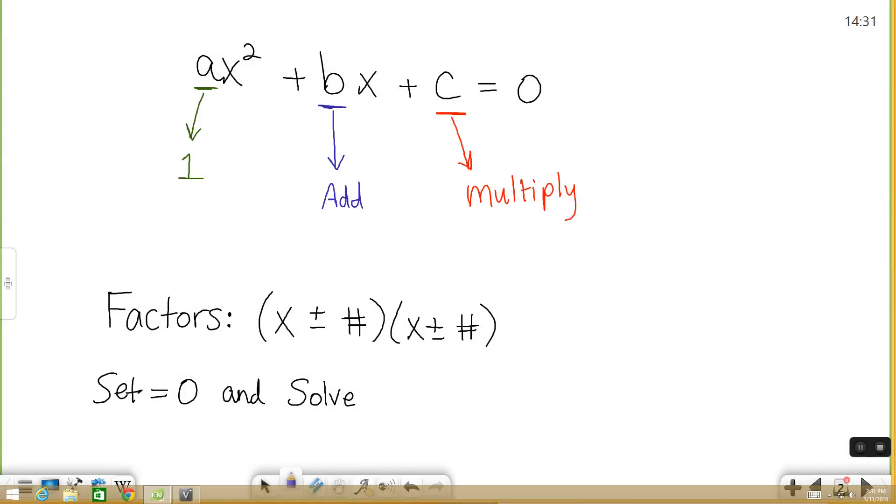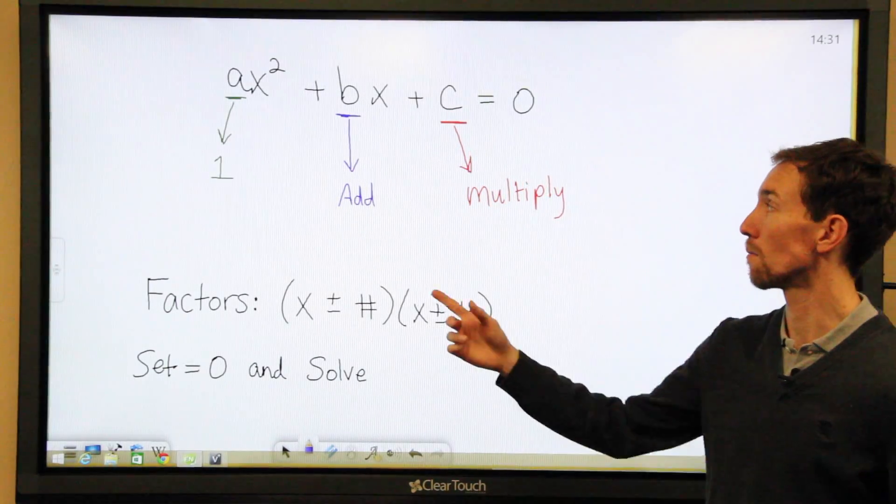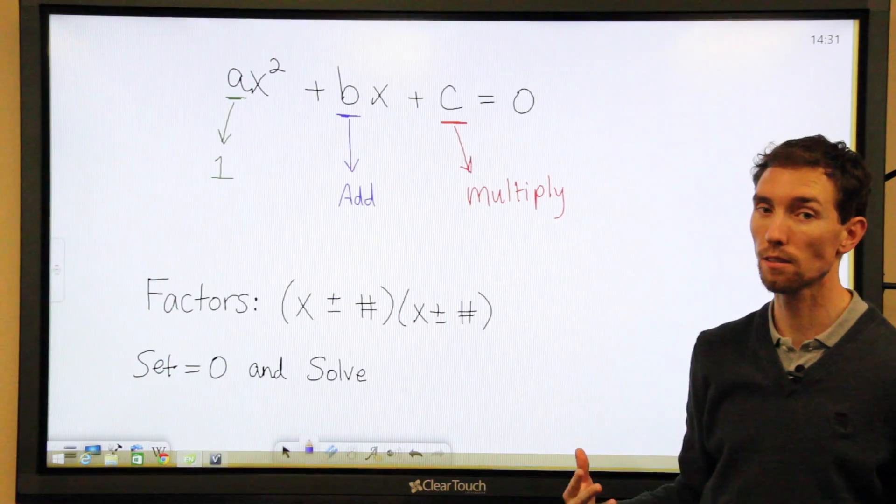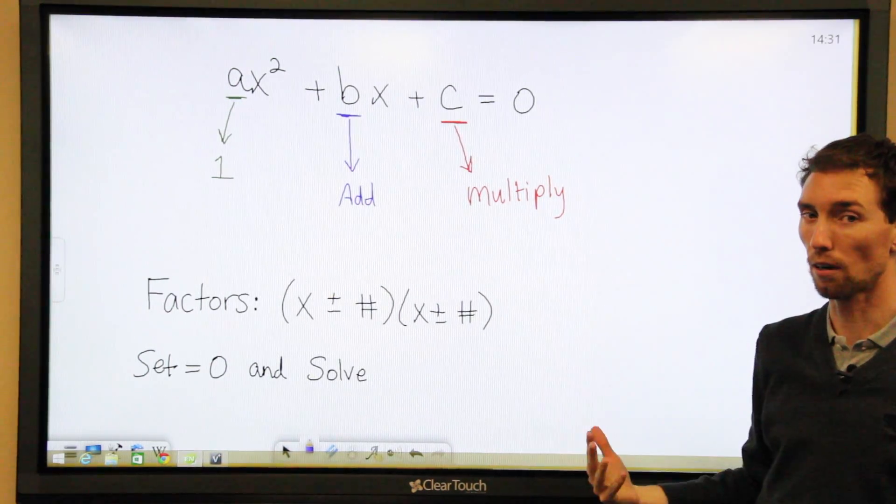So this is a quadratic equation in the form ax² + bx + c. In order to use the factor sum method, there's a couple of things that have to happen. First of all, your a, which is the first coefficient, has to be one, or else these steps that I show you aren't going to work.